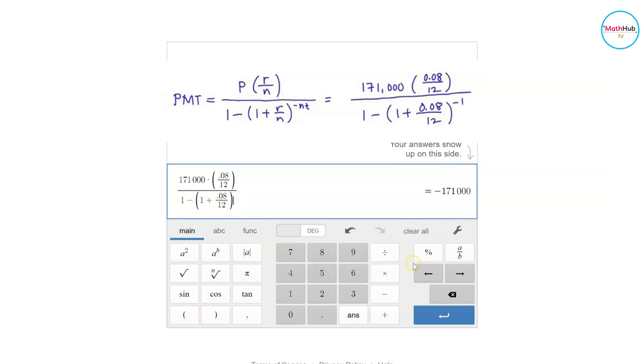And then this expression will be raised to negative 12, so enclose it in parenthesis, 12 times 30 for 30 years.